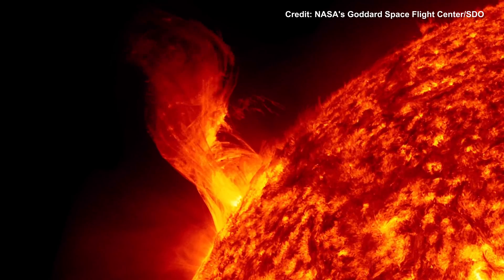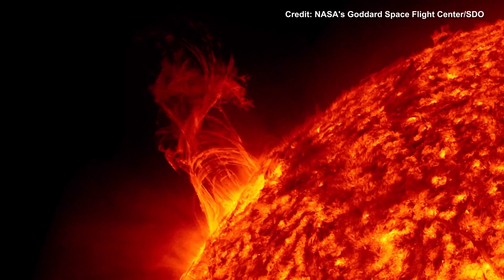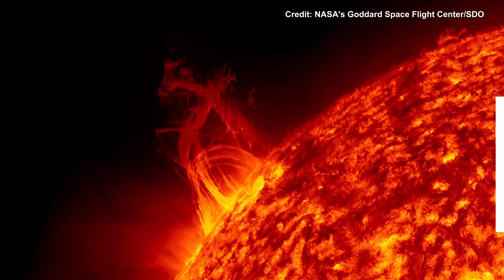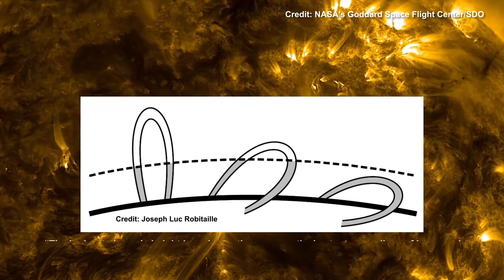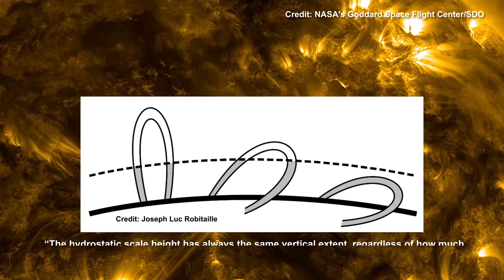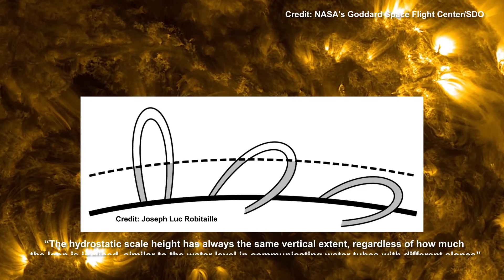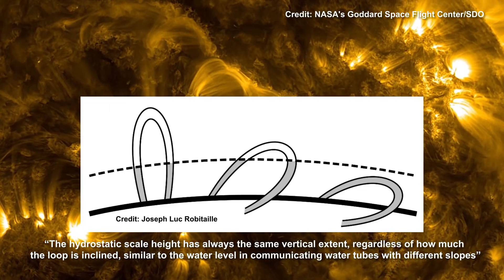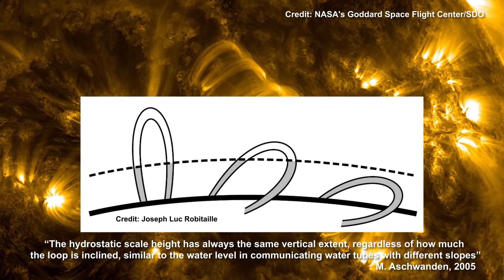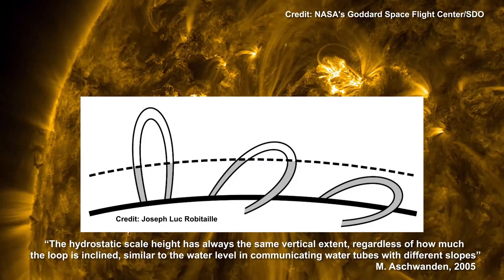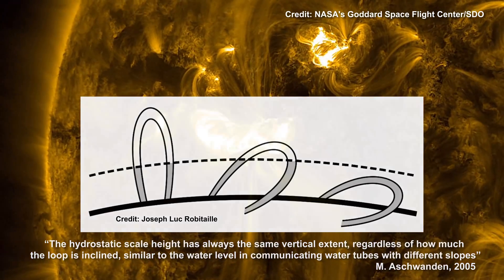As a result, loops can have more material near their bases in response to such forces, as you can see in this figure. Astronomers have explained it this way: the hydrostatic scale height has always the same vertical extent regardless of how much the loop is inclined, similar to the water level in communicating water tubes with different slopes. This behavior is not possible if the loops were simply made of sparse gaseous plasma.